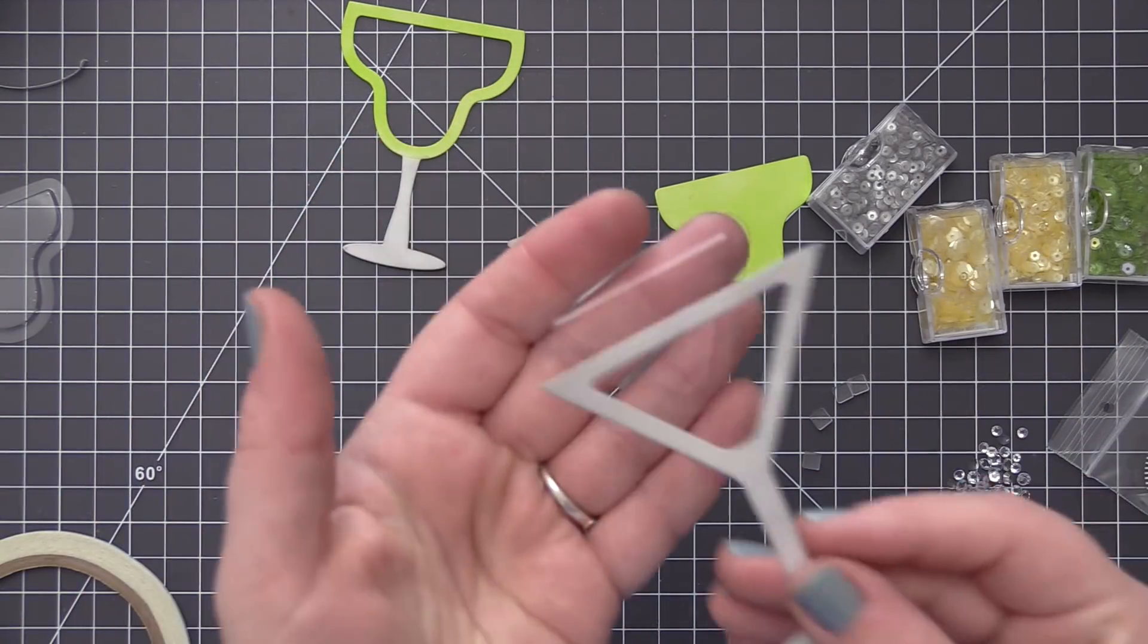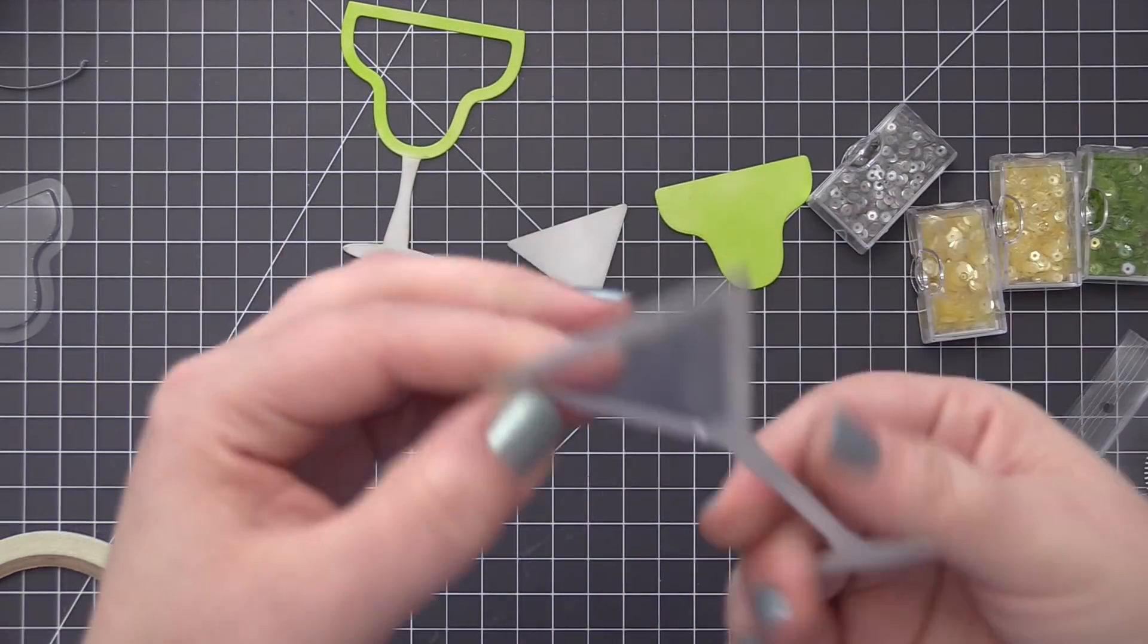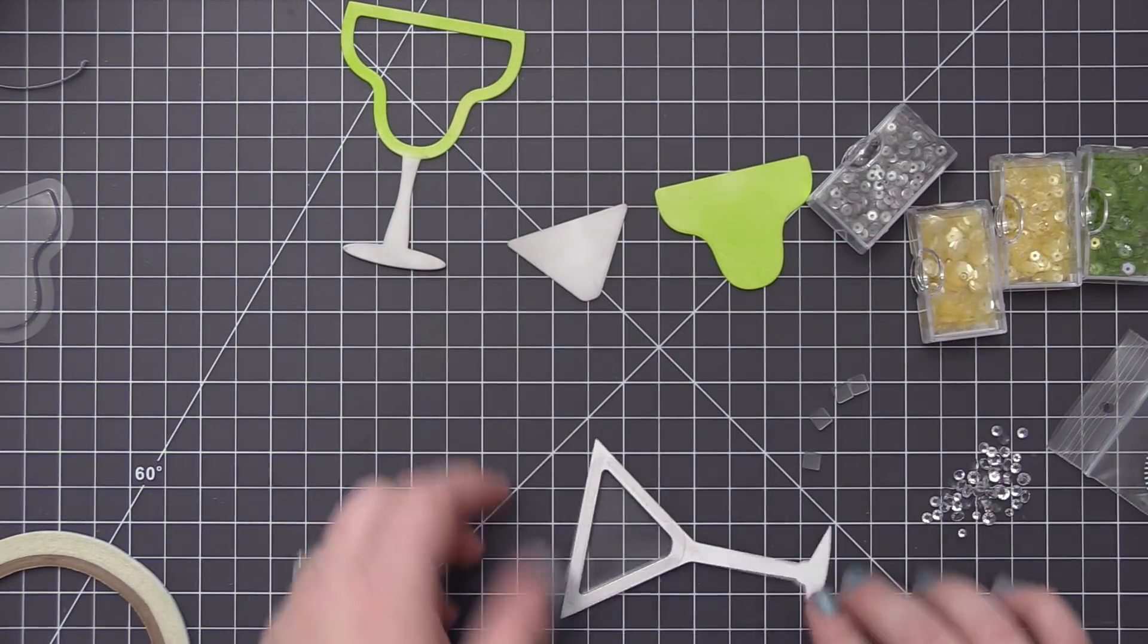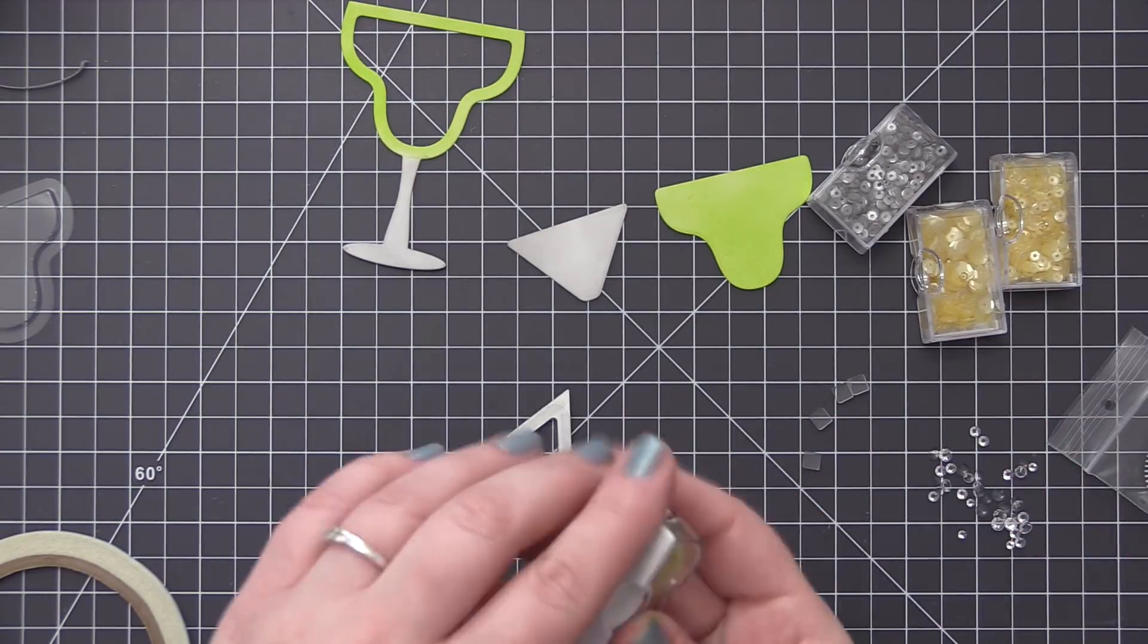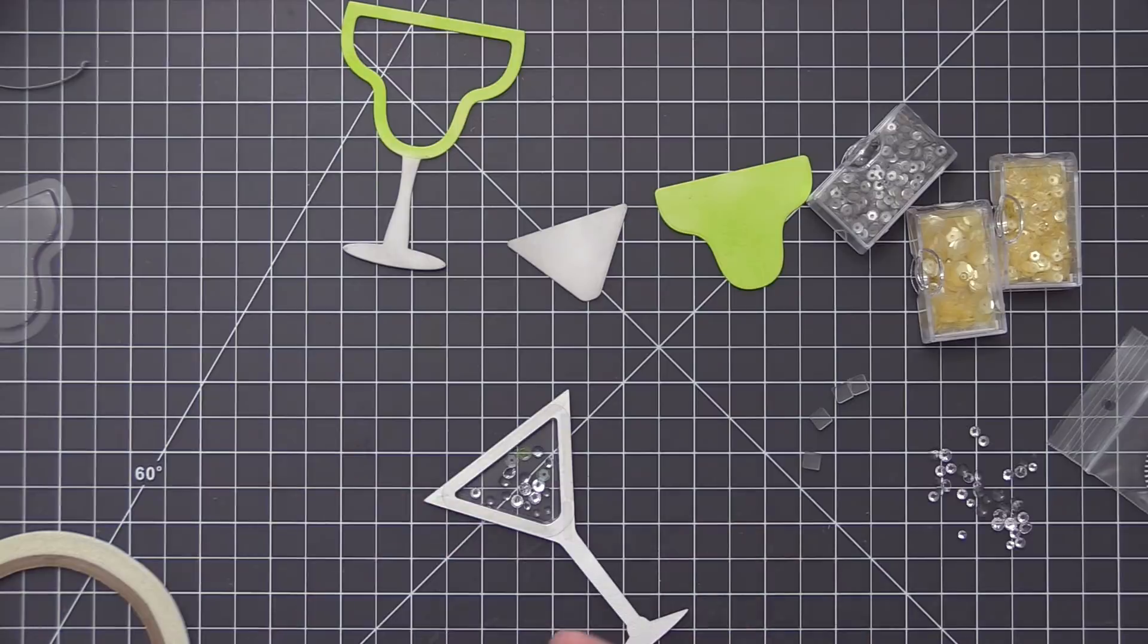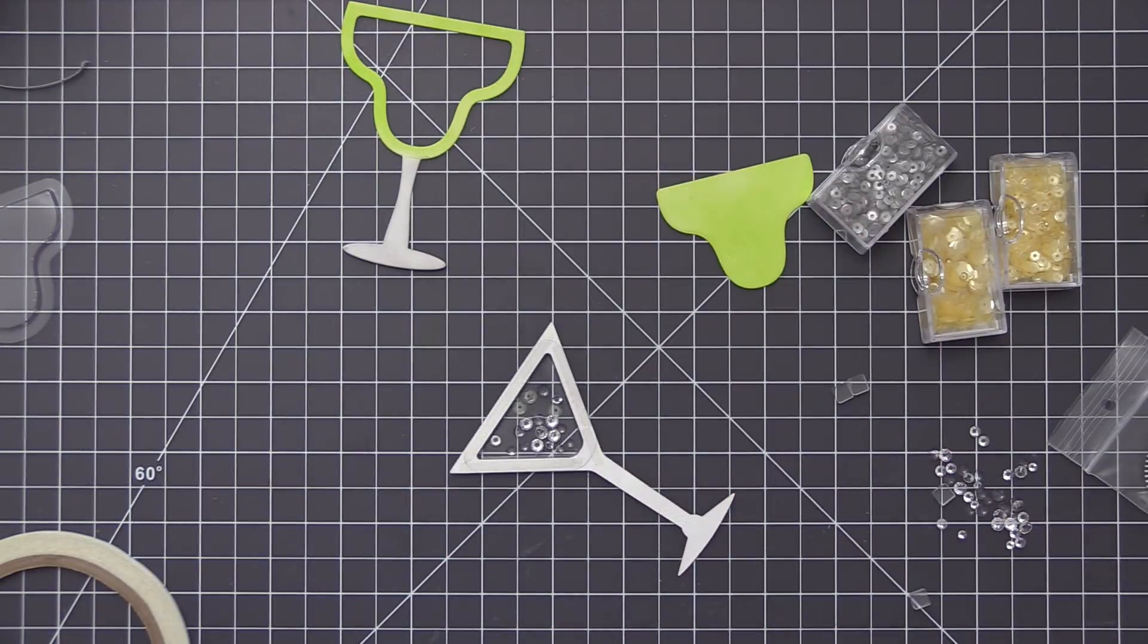So the first one up is the martini glass so I added some eighth inch score tape on the back of that die-cut piece and then I put the shaker pouch directly in the opening. They're already sized to fit perfectly. And for the martini glass I'm using some crystal gems and I'm also adding some green sequins to mimic olives.